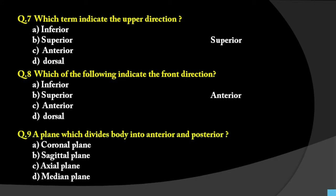Question number 9: A plane which divides the body into anterior and posterior. A plane divides your body into equal parts. This plane goes right through the middle, dividing the body into an anterior (front) part and a posterior (back) part. The plane names given are coronal, sagittal, axial, and unmedian. The answer is coronal plane because it divides the body into anterior and posterior parts.